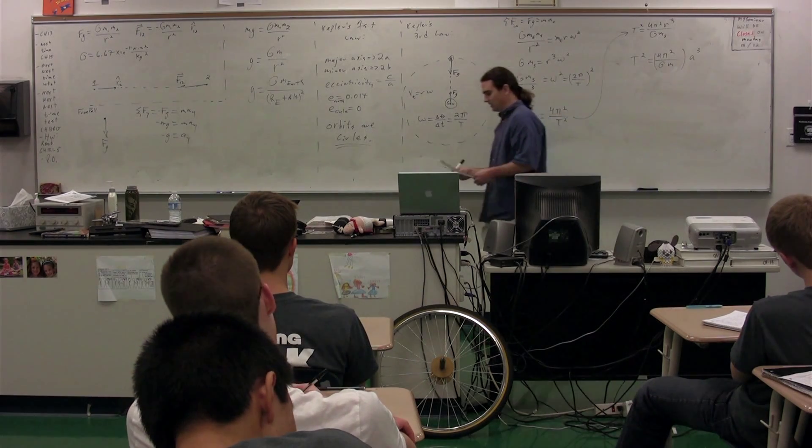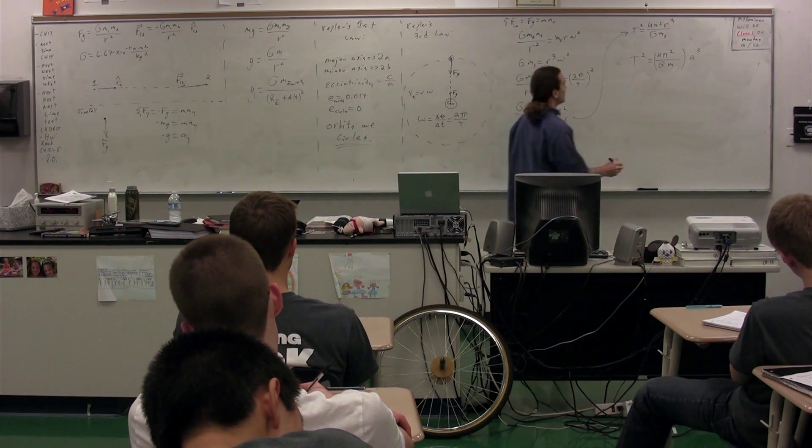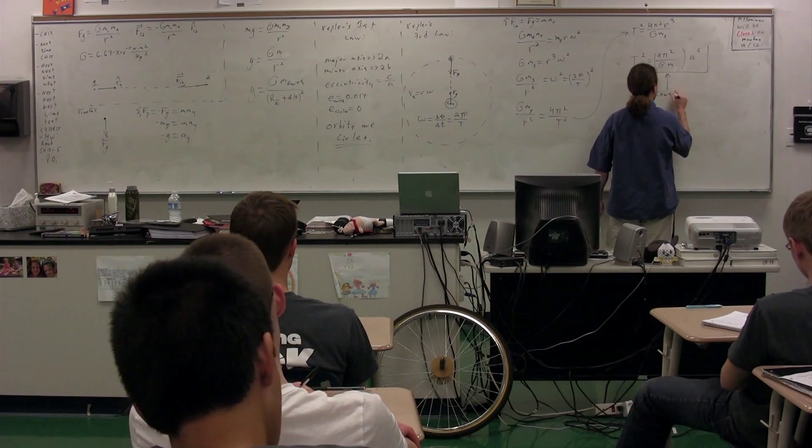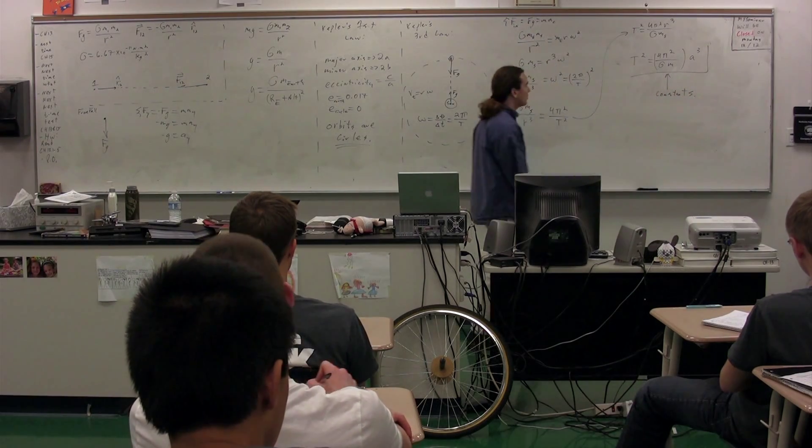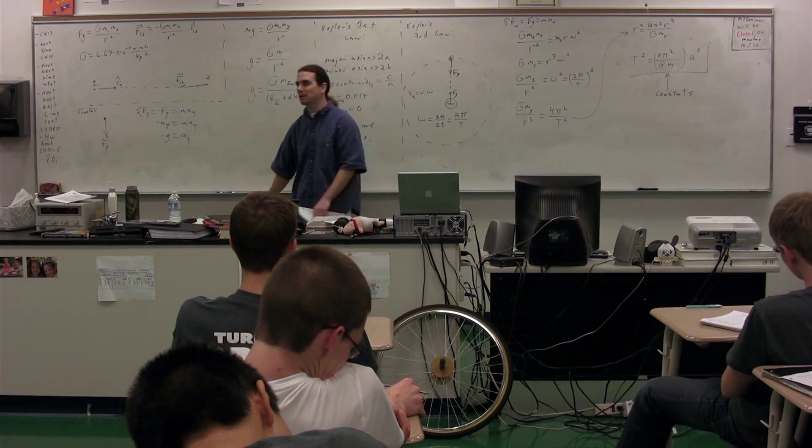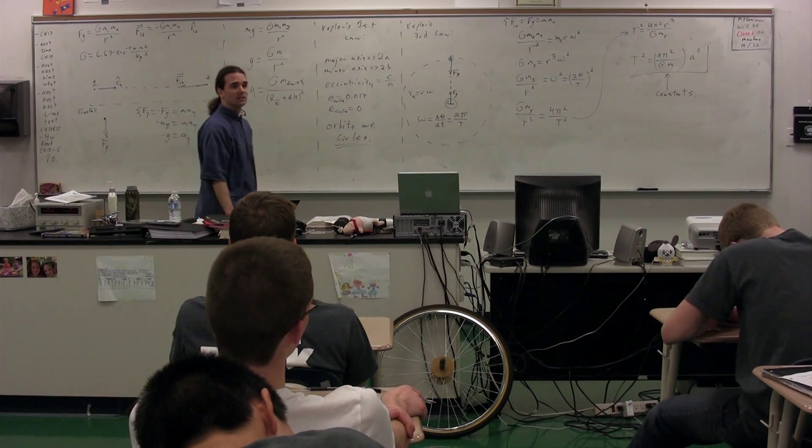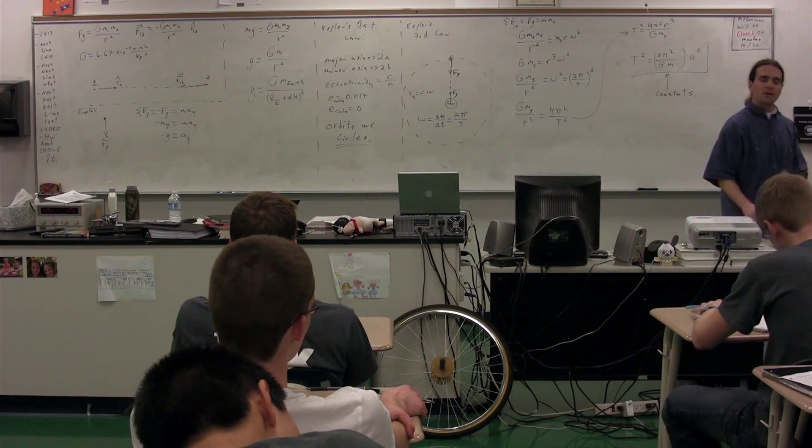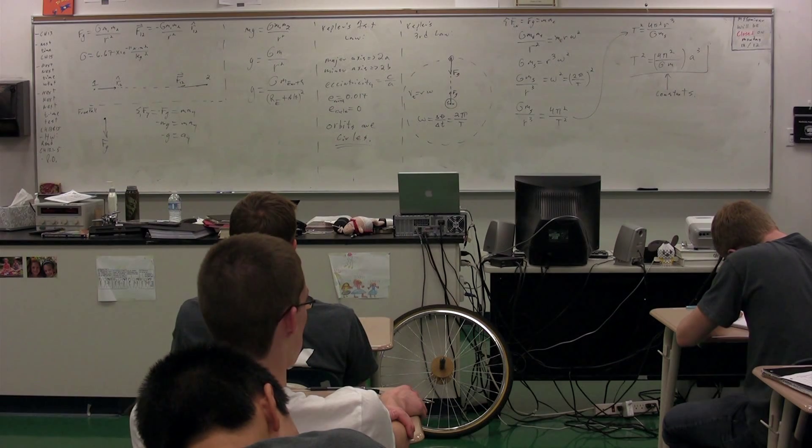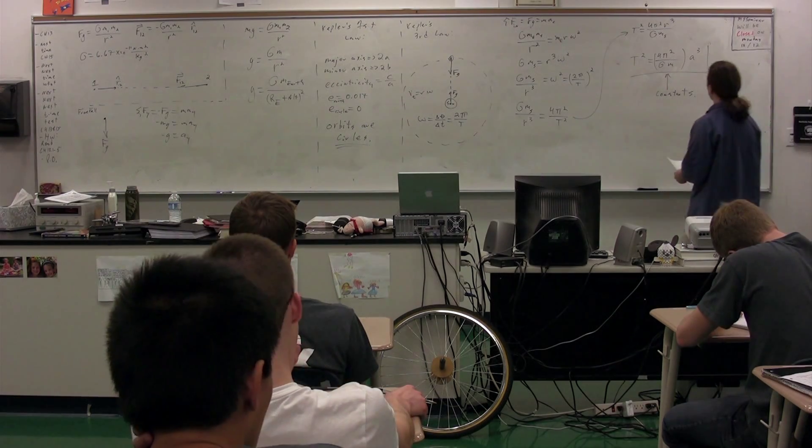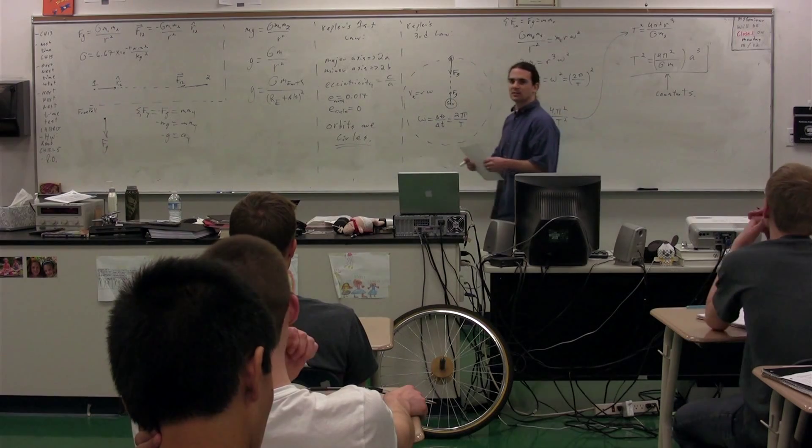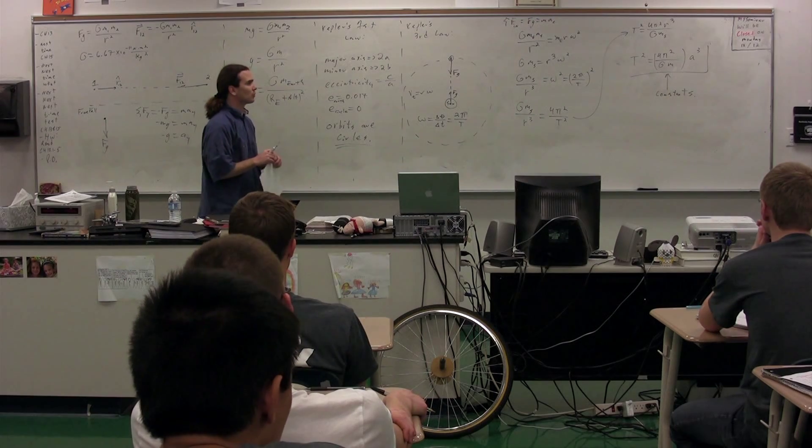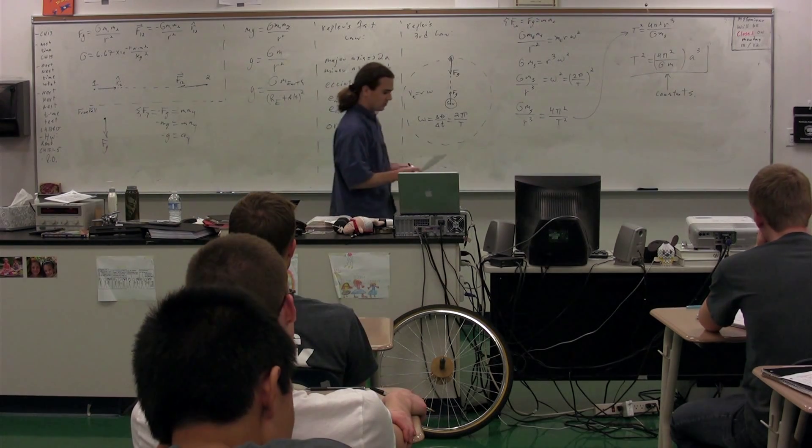That is Kepler's third law. Notice, that four pi squared divided by big G times the mass are all constants. They're all just numbers. So, the period is actually related to the radius of the orbit by just the constants, and that, really, it's just the mass of the object in which it's in orbit around. Now, that is Kepler's third law.